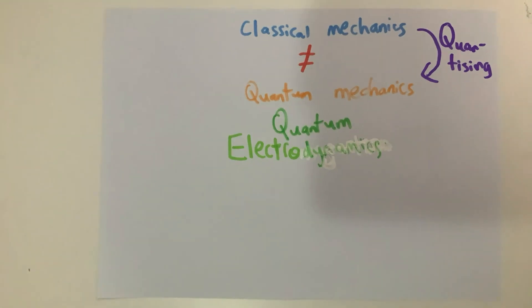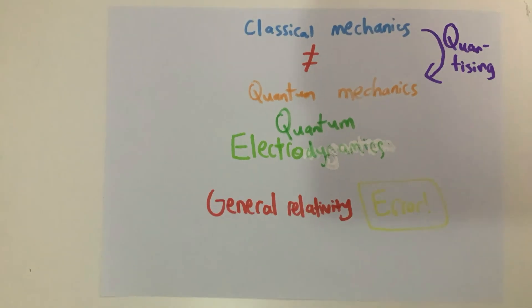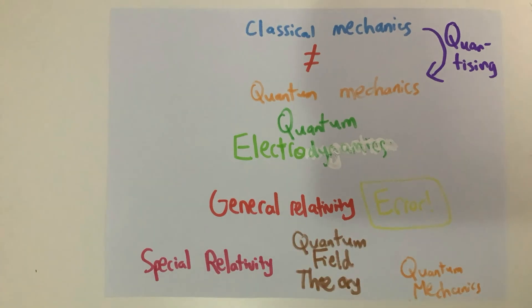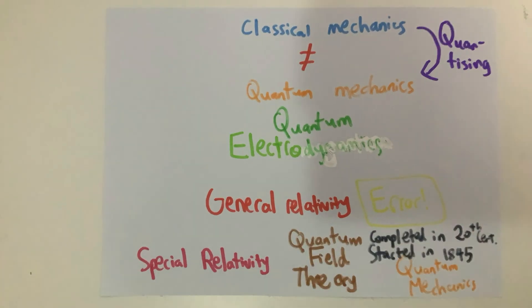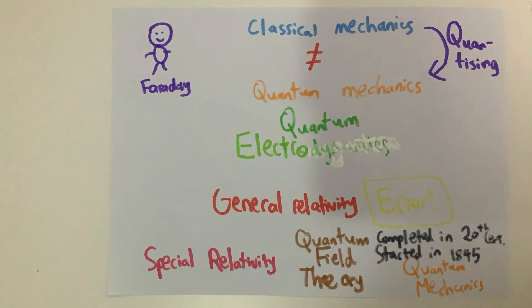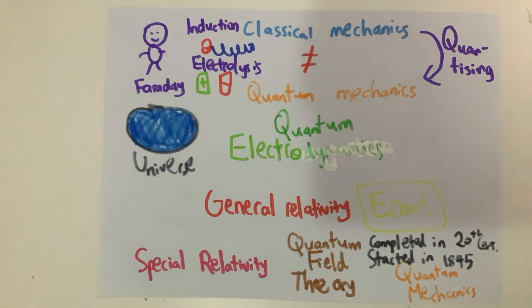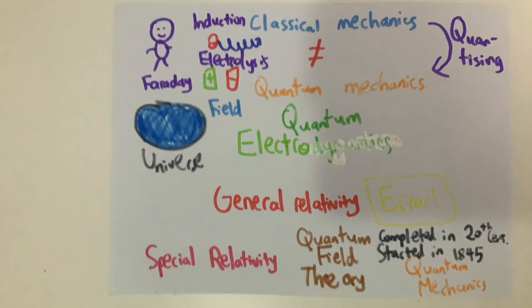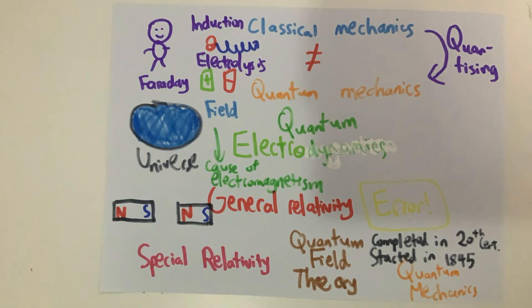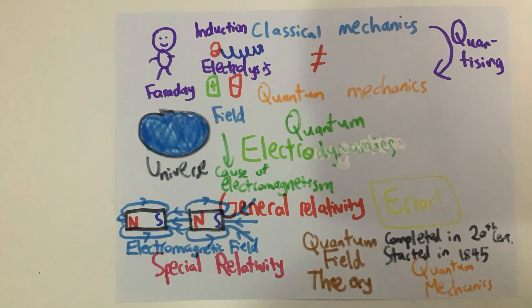To paint a better picture of our world, physicists came up with quantum field theory, which combines the principles of quantum mechanics and special relativity. While it was formally completed in the 20th century, Michael Faraday kicked it off in 1845. Faraday, the scientist who discovered the electromagnetic induction and electrolysis, hypothesized that there was an invisible ocean-like continuum spread across the entire universe, which he called a field. He proposed that this field was the cause of electromagnetism, and it is always there, even when there are no objects there. For example, we know that the space between two magnets is not empty, but filled by what we now call the electromagnetic field.